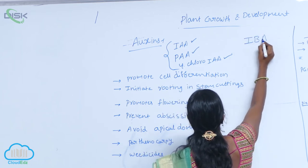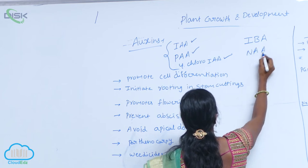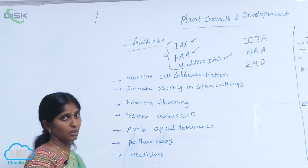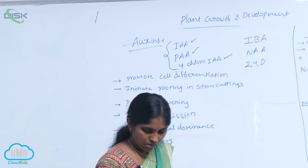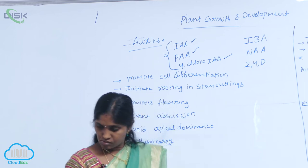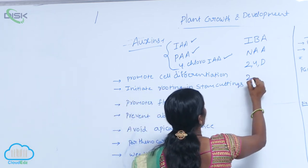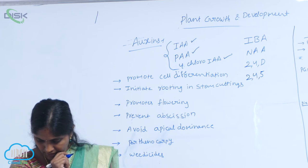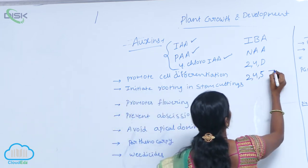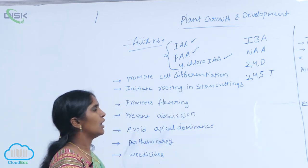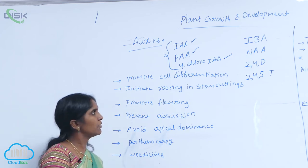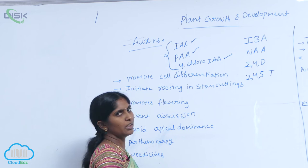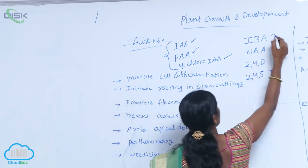The artificially prepared auxins are IBA, indole butyric acid; NAA, naphthalene acetic acid; 2,4-D, 2,4-dichlorophenoxyacetic acid; and 2,4,5-T, 2,4,5-trichlorophenoxyacetic acid. These are the synthetic auxins.